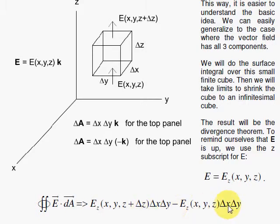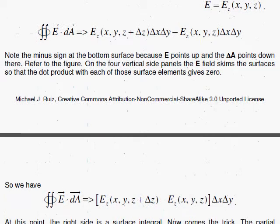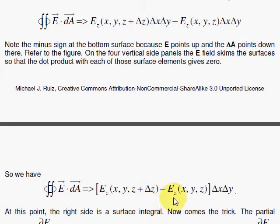So we have this nice setup here where I can factor out the delta x, delta y, which I'll do here, and have this difference of the electric field component, the z component. And this is looking like a derivative. You have something with z plus delta z, and then you subtract with z.